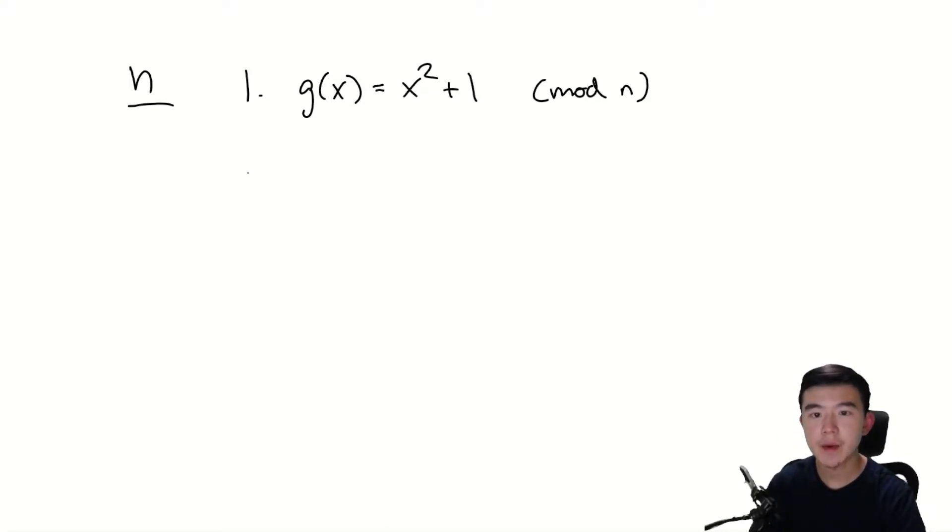So g takes in an integer x, it squares it, it adds 1, and it takes the remainder when that number is divided by n. Next, we're going to set an initial value, x₀ = 2. This is an arbitrary value, we could choose anything we wanted to.